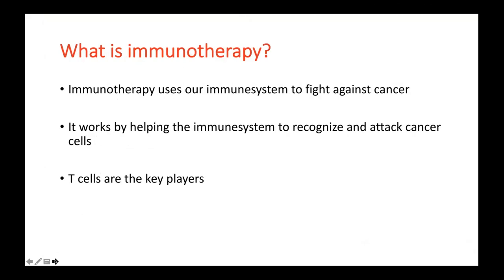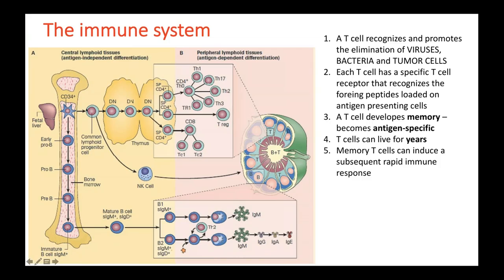What is immunotherapy? Immunotherapy uses our immune system to fight against cancer cells. It aims at improving the capacity of the immune system to recognize and attack cancer cells. As most of you probably know, T cells are key players in the immune system — they are like the pivot of all the immune response. The immune system's capacity to recognize a specific antigen, that is what characterizes a virus, a bacteria, and even tumor cells, is tailored by T cells.